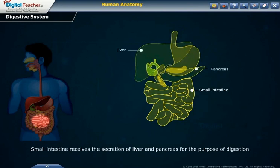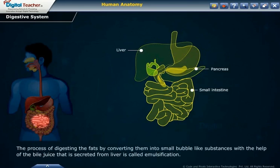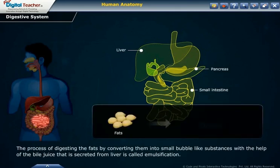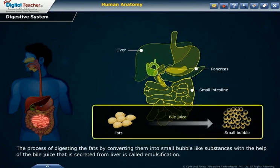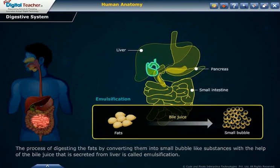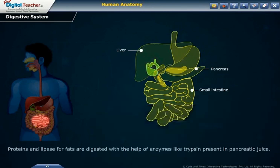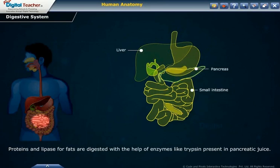The small intestine is the longest part of the alimentary canal. Here the complete digestion of carbohydrates, proteins, and fats takes place. The small intestine receives secretions from the liver and pancreas for digestion. The process of digesting fats by converting them into small bubble-like substances with the help of bile juice secreted from the liver is called emulsification. Proteins are digested by trypsin and lipase for fats, from pancreatic juice.